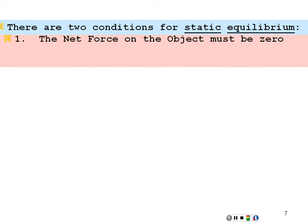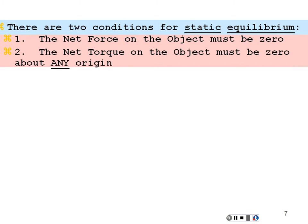So we have two conditions for static equilibrium. The net force on the object must be zero in any direction — x, y, z, or any arbitrary direction; all forces must add up to zero, meaning no translation. The net torque on the object must be zero about any origin. If the object is truly static — not translating and not rotating — then the net torque must be zero. And that must be true about any origin we choose, not just the center or the side. If it's not rotating at all, no matter what origin we choose, the torques must add up to zero. That gives you a very powerful tool.